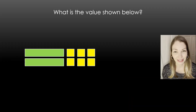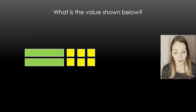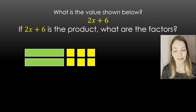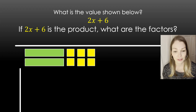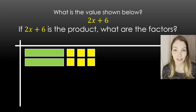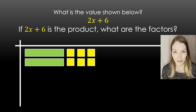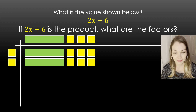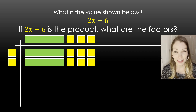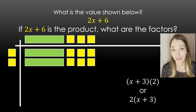Let's start out by looking at the value shown here, kind of like we did in the first part. We have 2x plus 6. If that's our product, what are the factors? If that's our area, can we find the dimensions? This rectangle is set up for us so we can see the format and try to figure out the two dimensions. Across the top we have x plus 3, and then along the side we have 2 — those are our two factors.